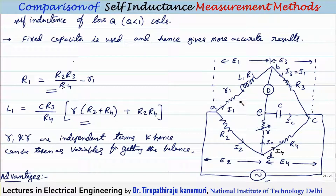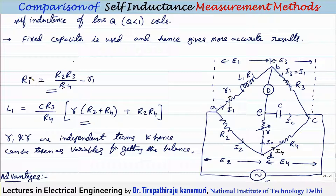The variable elements are small r and r1. The balance equations give R1 = R2R3/R4 − r1, and L1 = C × [R3(r × R3/R4)(r + R2) + R2R4]/something. Since r2, r4, r3 appear in both equations, the independent terms are r1 and r, which are varied for easy convergence to balance.